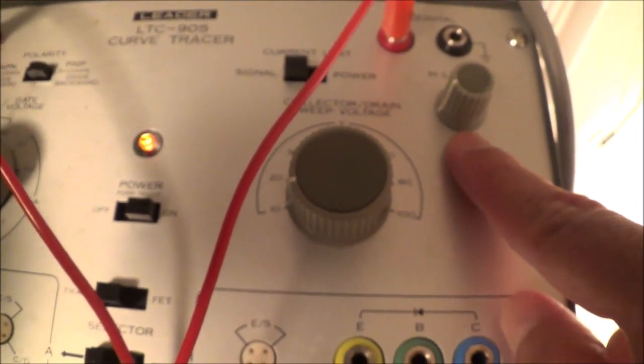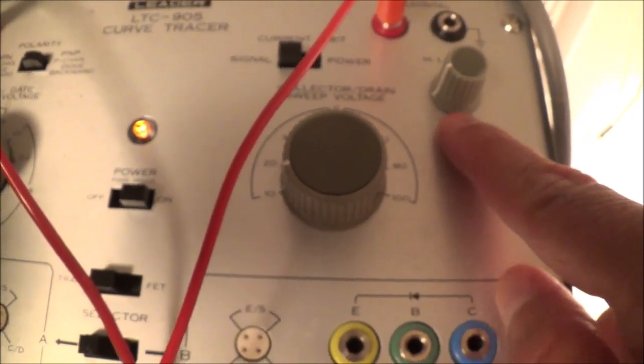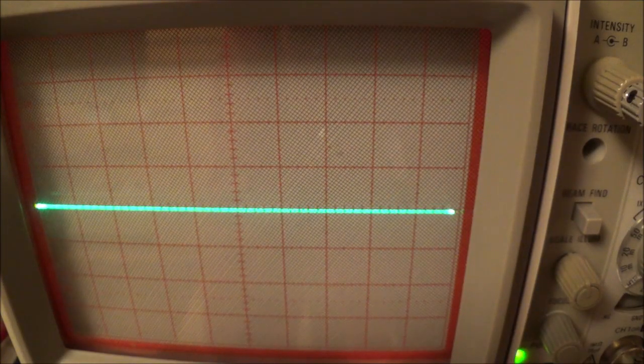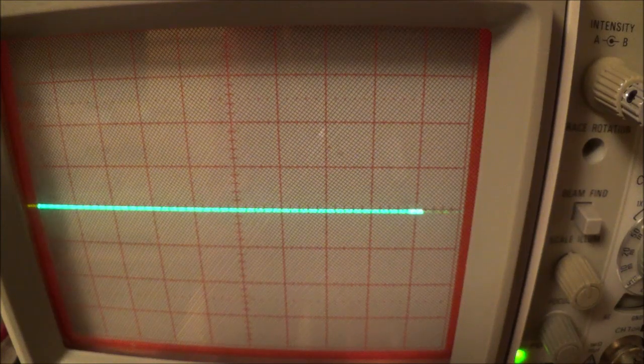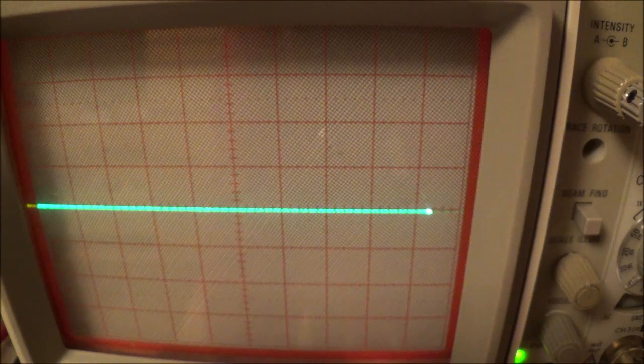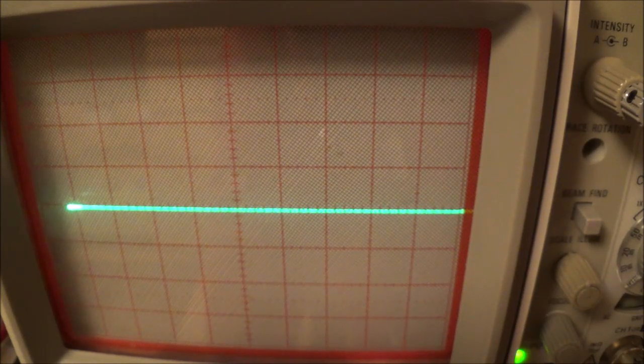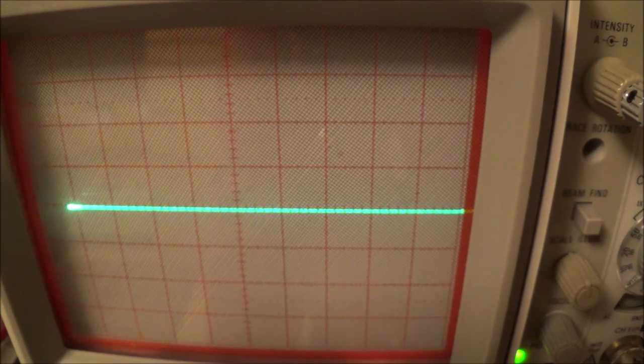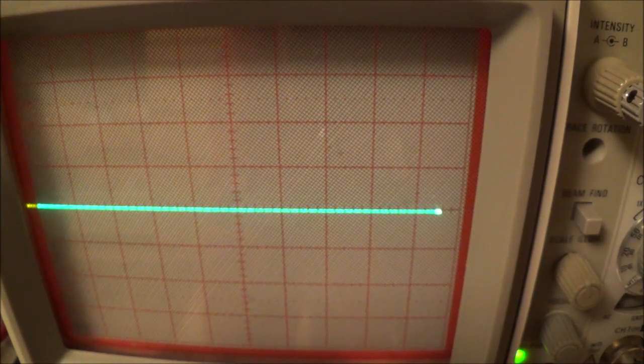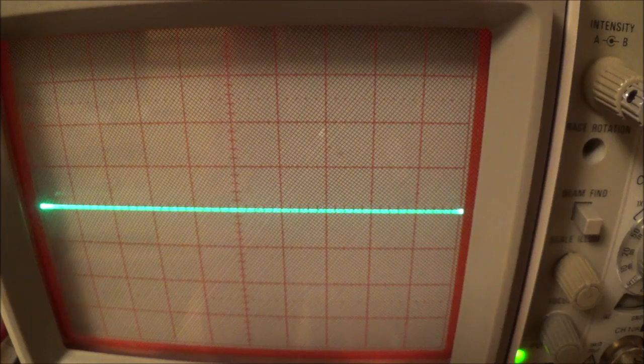Here's the 10 volts per division and here again is that horizontal length control for the calibration with the oscilloscope scale. For good measure here, I'm actually readjusting that trace. I've got no diode hooked up now.